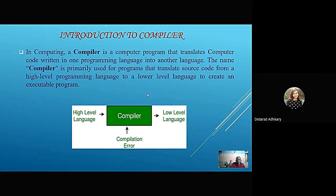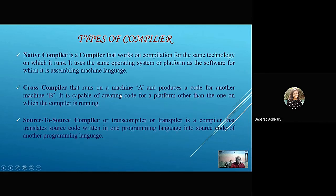There are three types of compilers. Native compiler, cross compiler, and source-to-source compiler. A native compiler works on compilation of the same technology on which it runs. It uses the same operating system platform as the software for which it is assembling machine language.